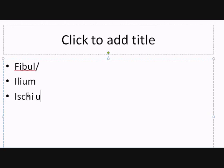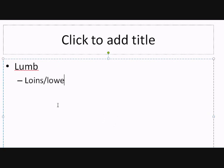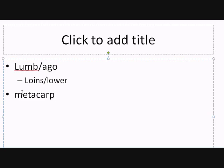Since we talked about ilium, we should also mention ischium — we covered the pelvic girdle previously, including the ilium, ischium, and pubis. 'Lumbo' refers to the loins or lower back, so lumbago would mean lower back pain. 'Metacarp' refers to the metacarpals — that's your palm, your hand bones.